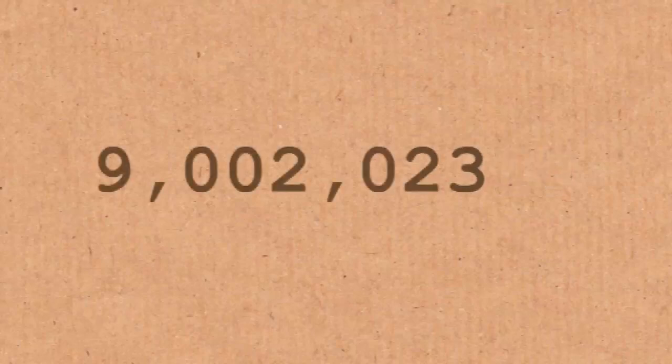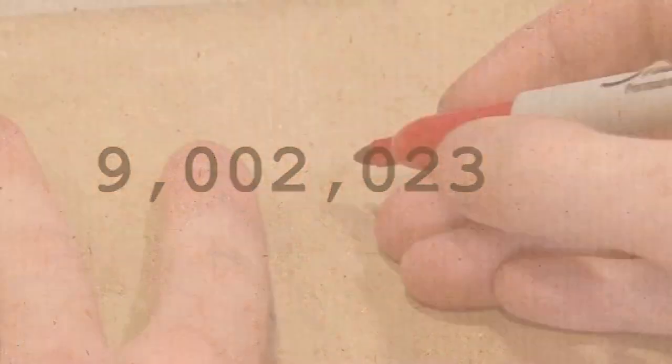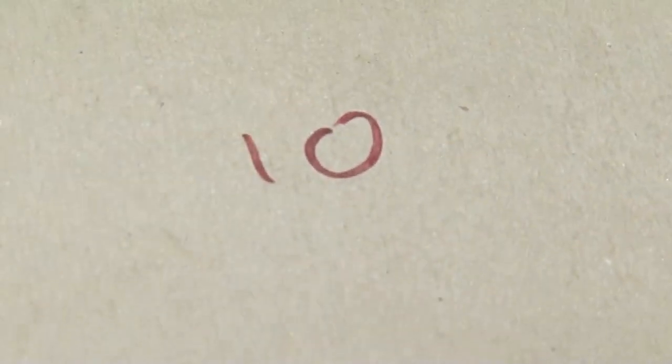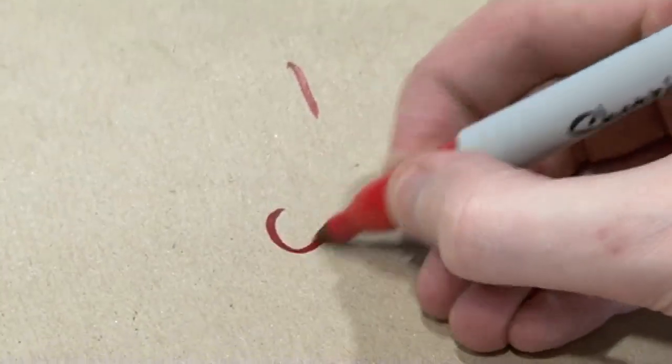Well, 23 contains the digit 3. 310 contains the digit 3. 9,002,023 contains the digit 3. What about numbers less than 10? How many numbers less than 10 contain the digit 3? It's just 3 — just one of them. So the proportion is 1 out of 10, that's 0.1, it's 10%.